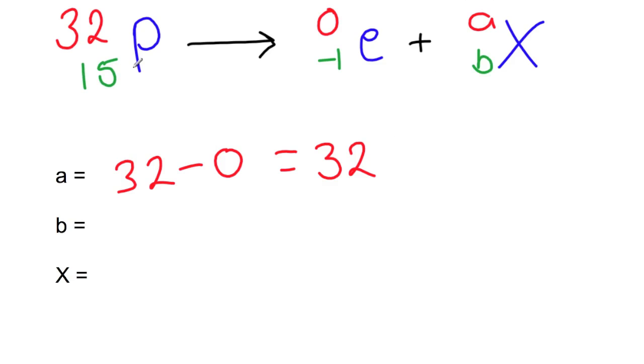And for b, our atomic number, we're starting with 15, and we're doing minus negative 1, which is the same as adding 1. So our new atomic number is 16.